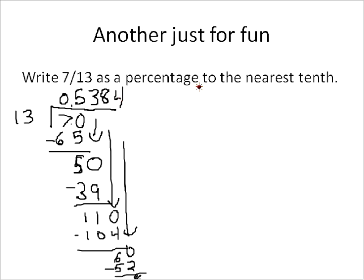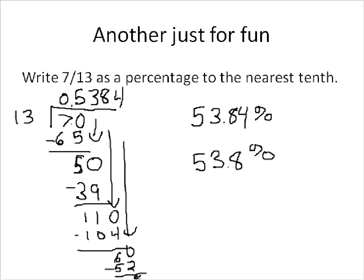We wanted to write that as a percentage to the nearest tenth. To change the decimal 0.5384 into a percentage, that would be 53.84%. When we round to the nearest tenth, we leave one place after the decimal. The digit after the tenths place is 4, which is less than 5, so we don't round up. We get approximately 53.8%. So if you score 7 out of 13 on a test, that means you've got 53.8% — this is a helpful and useful tool.